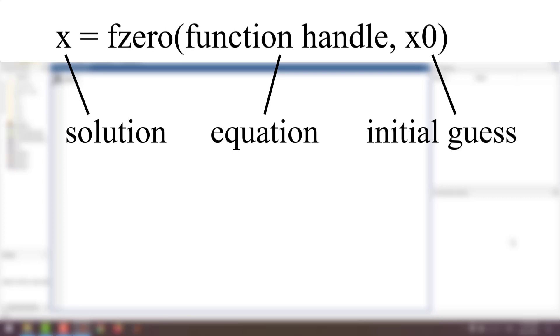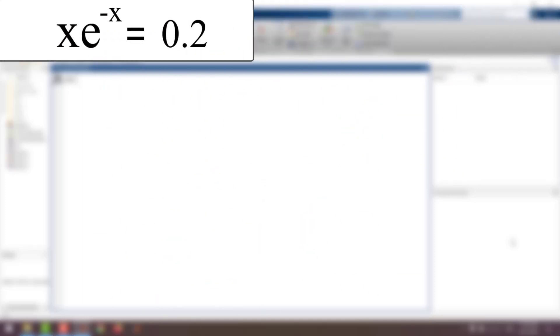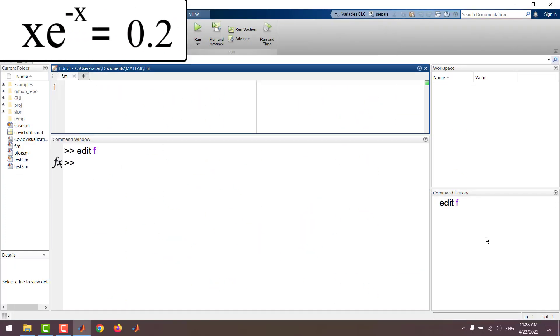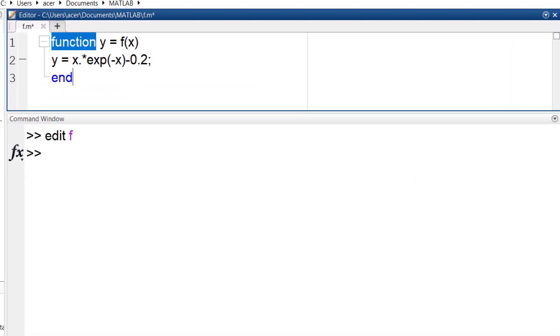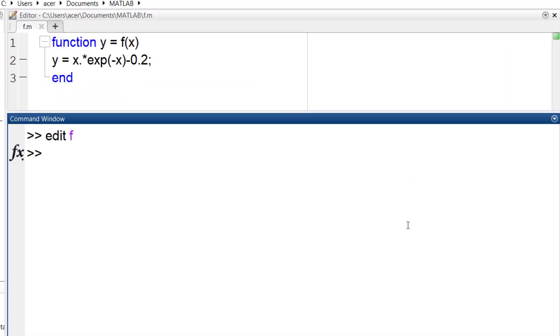Let's solve this equation. I create a function named f with x and y as input and output. I advise you to vectorize your expressions. Now that I have the function I can type solution equals fzero at sign f comma zero and that's my solution.